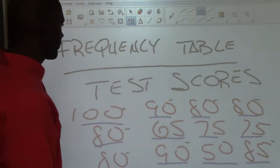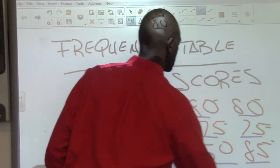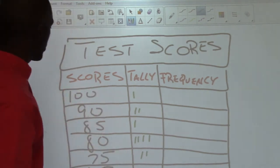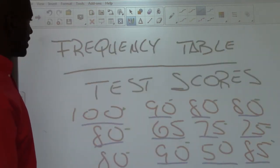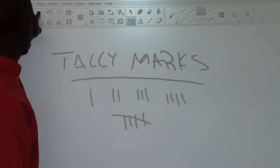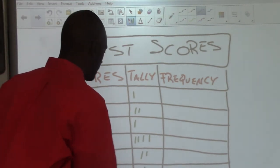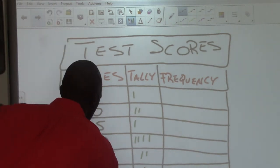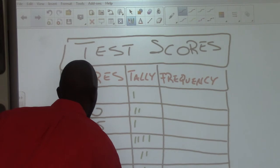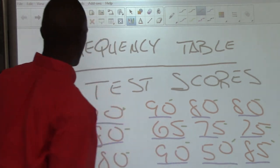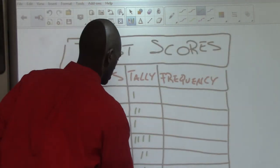For 75, we have one, two — two 75s — so 75 gets two tally marks. For 65, we get one tally mark. We also had a 50, so we go back and mark off our 50 — 50 gets one tally mark.